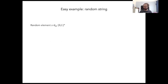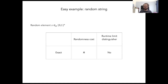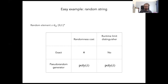Here's an example of a random object, namely a random string. This may be the most basic random object that's interesting to look at. It can be exactly generated using n bits of randomness, and because this is the exact object, it cannot be distinguished from itself. But we also have approximate ways of generating such a random string. More precisely, we have a primitive called a pseudorandom generator, which can use less than n bits of randomness to generate a string that is indistinguishable from a random string to any polynomial time distinguisher.